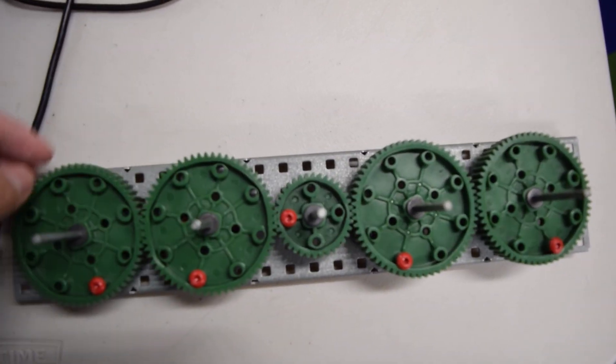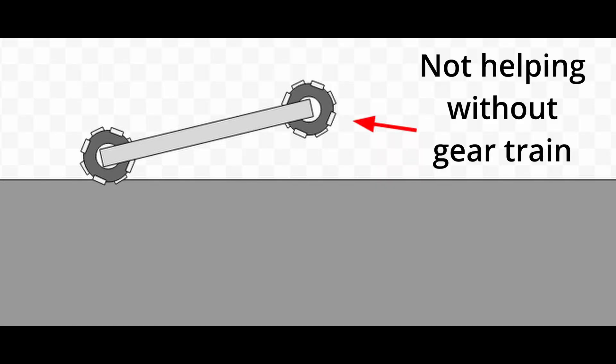You should use a gear train in your chassis for two main reasons. First, it helps your motors work together. Without a gear train, if one wheel lifts off the ground, the motor can't help.